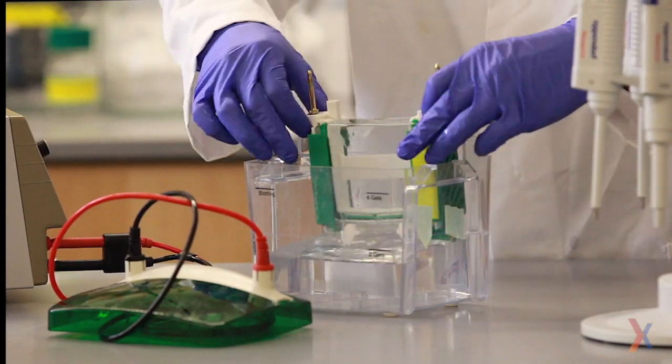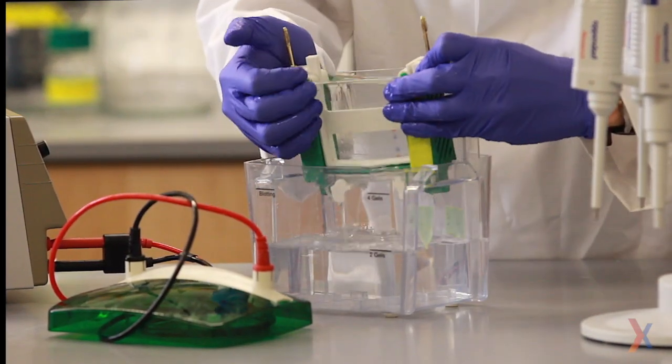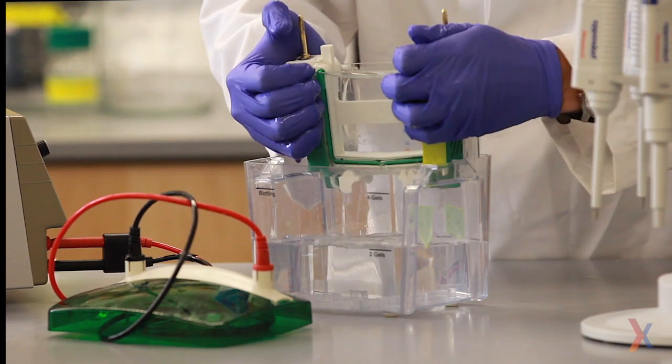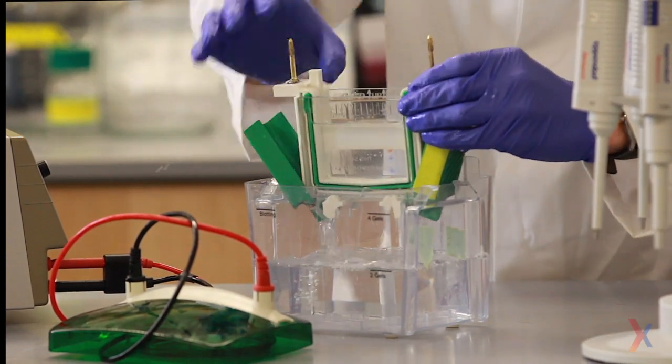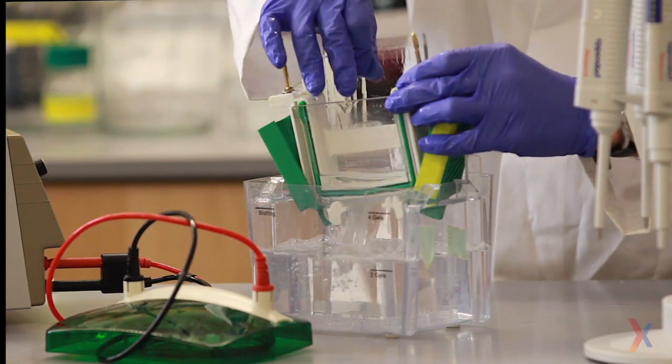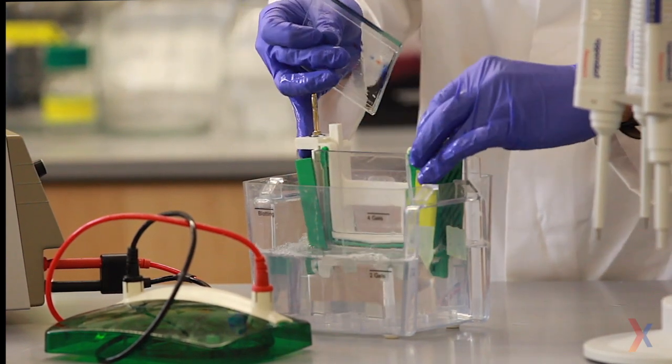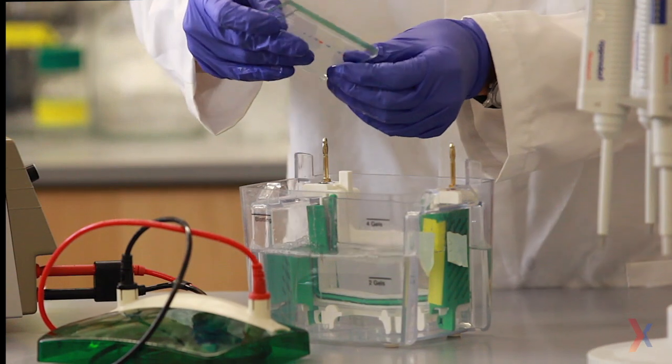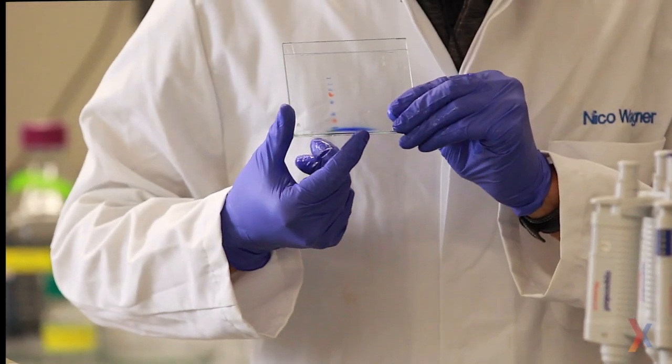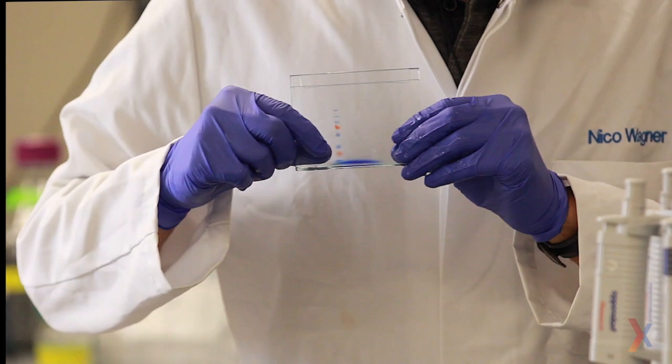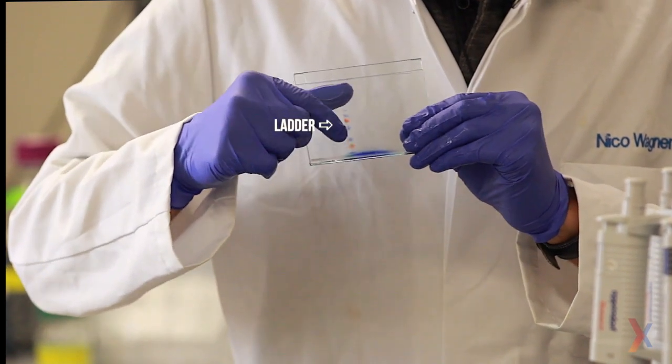Disassemble the gel box and remove the gel from the cassette. I'm being careful to contain all of the buffer within the gel running box so it doesn't get on the bench. And now that it's out we can take a look at it. Like I already mentioned, the loading dye has made its way to the bottom and the ladder bands have nicely separated in lane one.